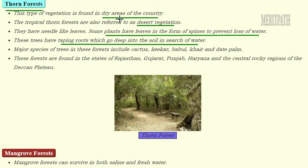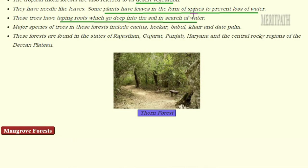The third type of natural vegetation is thorn forest, found only in the dry areas of the country — areas which receive less rainfall and have more summer climate. They are also known as desert vegetation. The leaves of plants in desert vegetation are modified to look like needles or spines to prevent the loss of water through transpiration, which is the loss of water from plants through evaporation.